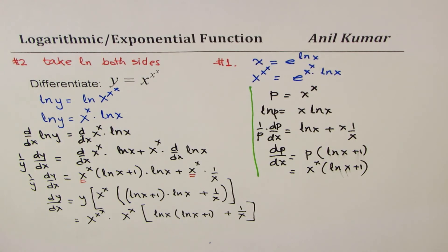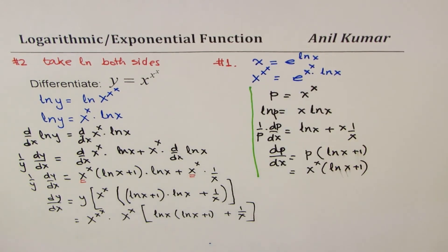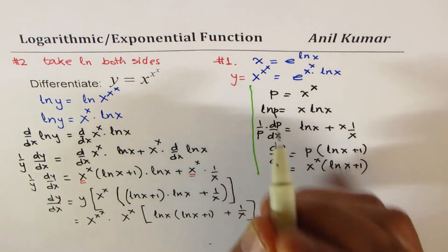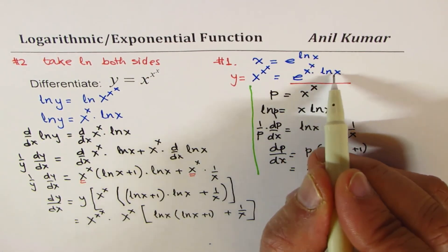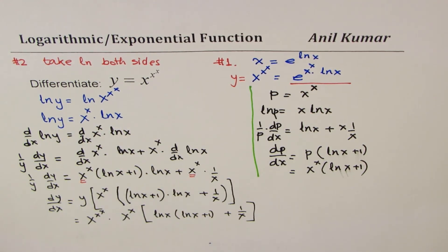I hope that is absolutely clear. Some of you could also find the derivative by writing y equals e to the power of x ln x to the power of x using method one — let that be an exercise for you. I hope you understand the process of using natural log on both sides to find the derivative of such exponential functions. Feel free to write your comments, share your views, and if you like and subscribe to my videos, that'd be great. Thank you and all the best.